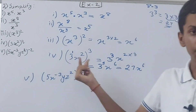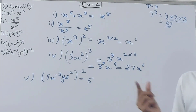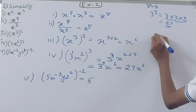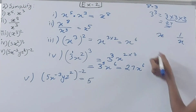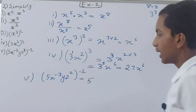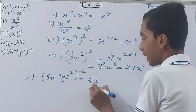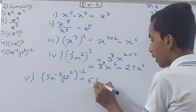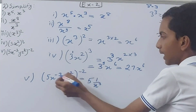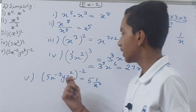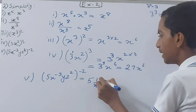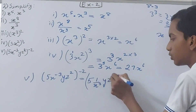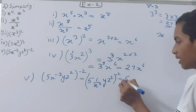x raised to the power minus 3 becomes plus 3 by reciprocating x: the reciprocal of x is 1/x, so x to the power minus 3 becomes 1/x to the power 3. Then y remains as it is, and z squared also remains as it is, with the whole thing still raised to the power minus 2.